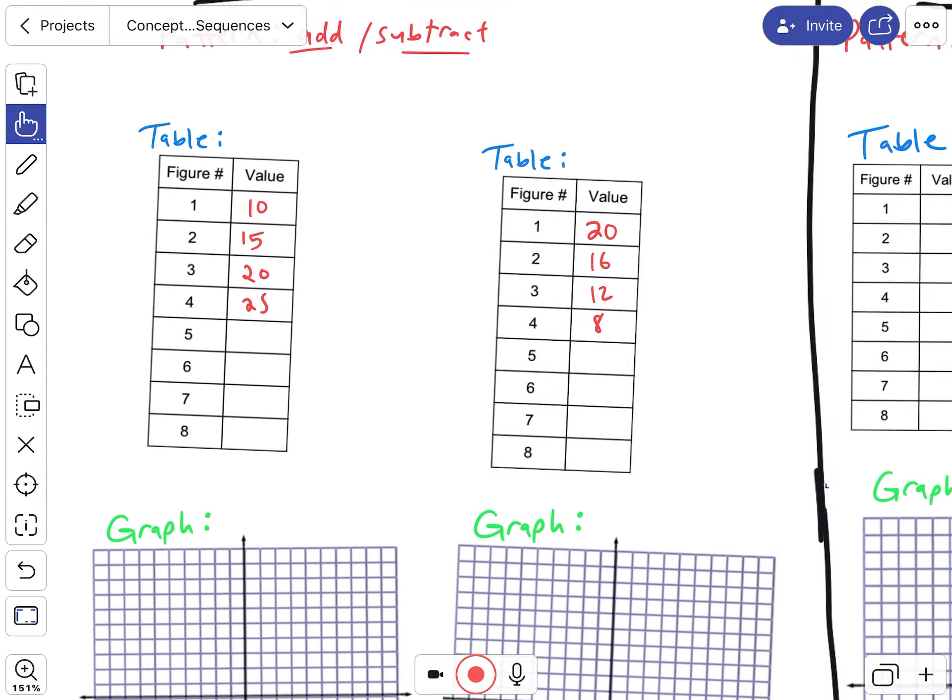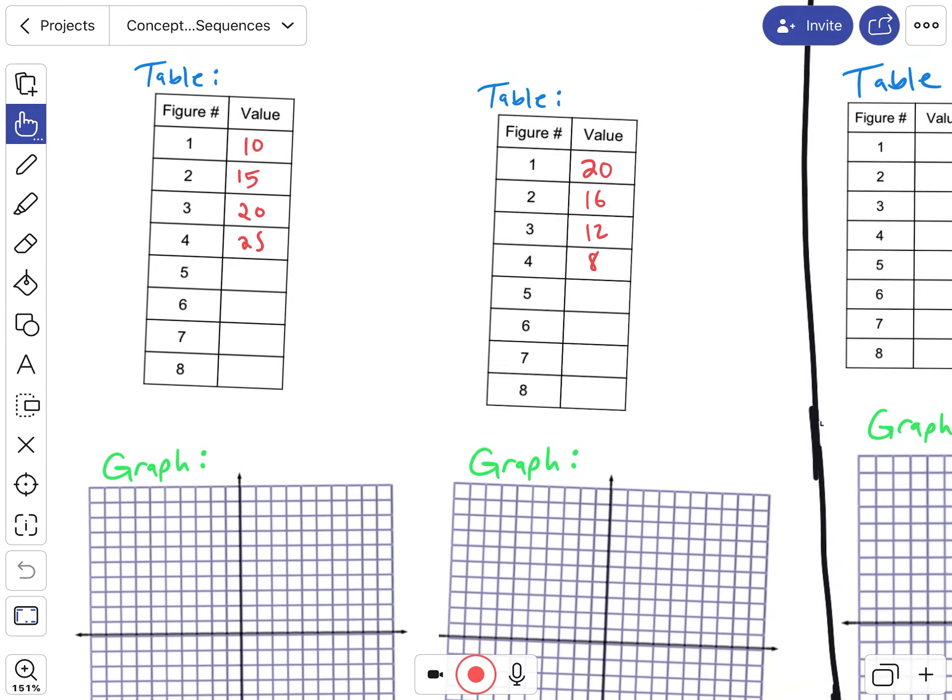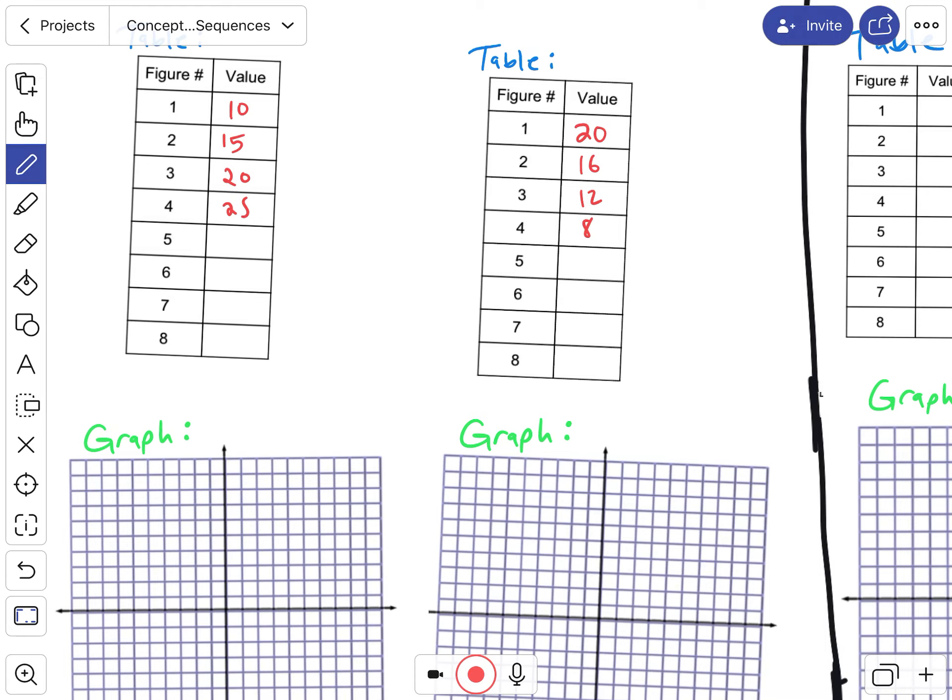Now when you take those values and we put them in a graph, let me graph the first one. Let me make these 10. So that's 10, 20, 30, and so on. And then we'll keep this 1 and 2. So 1, 10 is here. 2, 15 would be here. 3, 20 would be here. And then 4, 25 would be here. And so when you have a pattern like this where you're adding, this creates a linear function or a linear graph.